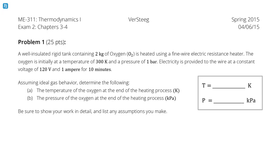Problem number one: a well-insulated rigid tank containing two kilograms of oxygen is heated using a fine wire electric resistance heater. The oxygen is initially at a temperature of 300 Kelvin and a pressure of one bar. Electricity is provided to the wire at a constant voltage of 120 volts and one ampere for ten minutes. Assuming ideal gas behavior, determine the temperature and the pressure of the oxygen at the end of the heating process.